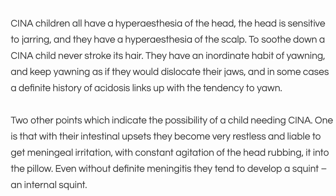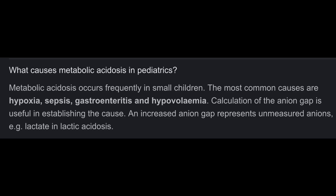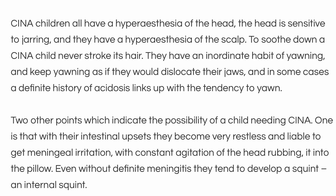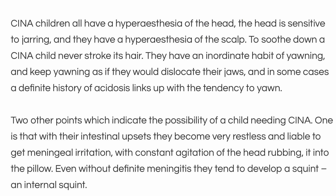Never stroke the hair of a Sina child. They have an inordinate habit of yawning and keep yawning as if they would dislocate their jaws. In some cases, a definite history of acidosis links up with the tendency to yawn. Two other points indicating a child may need Sina: with intestinal upsets they become very restless and liable to get meningeal irritation, with constant agitation of the head rubbing into the pillow. Even without definite meningitis, they tend to develop an internal squint.